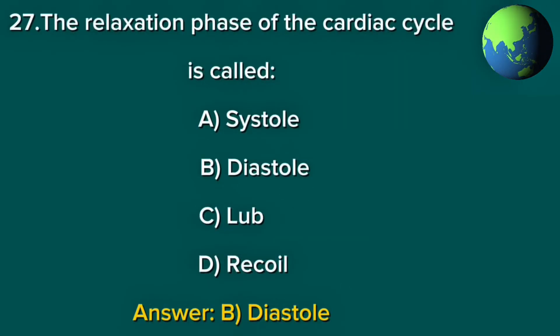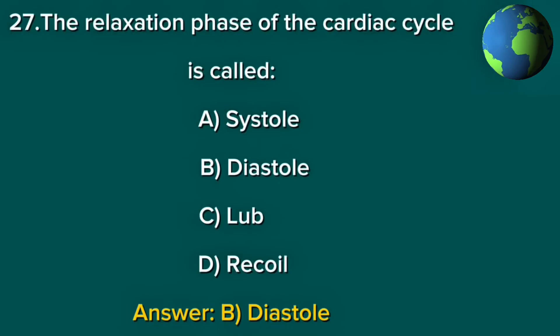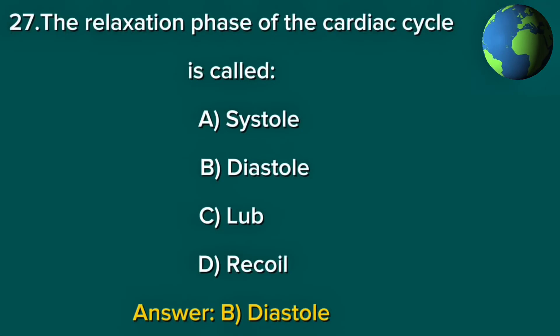Question 27. The relaxation phase of the cardiac cycle is called: A. Systole. B. Diastole. C. Lub. D. Recoil. Answer: B. Diastole.